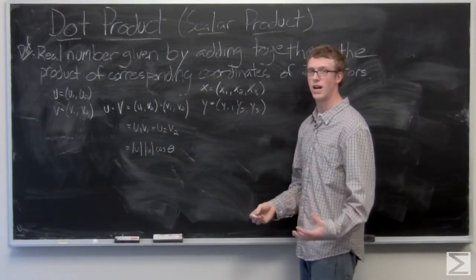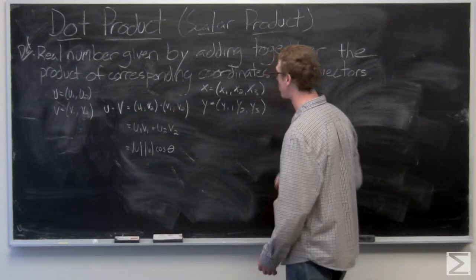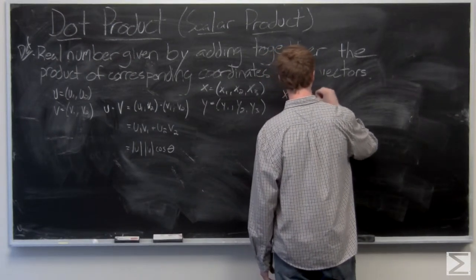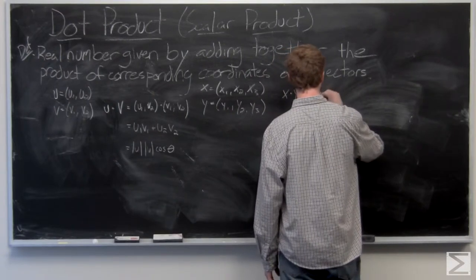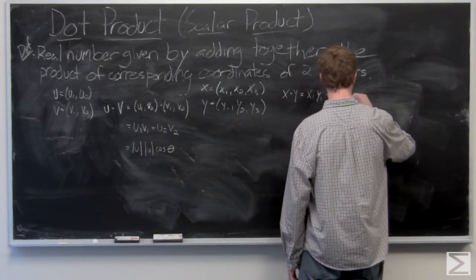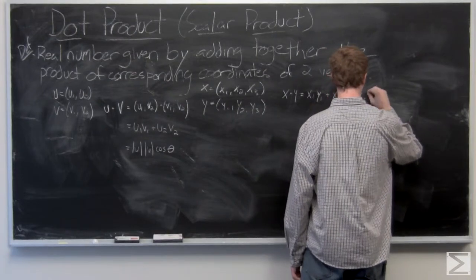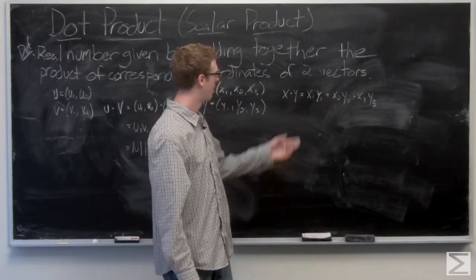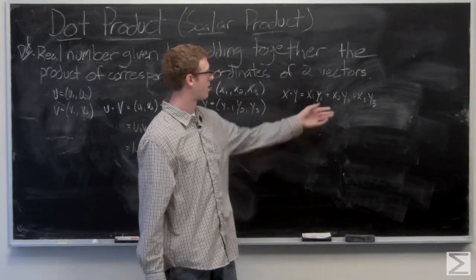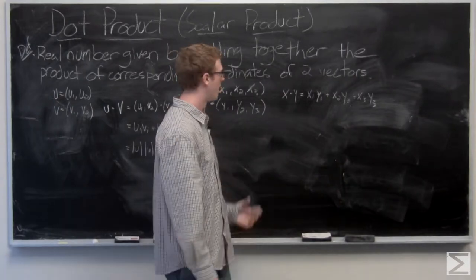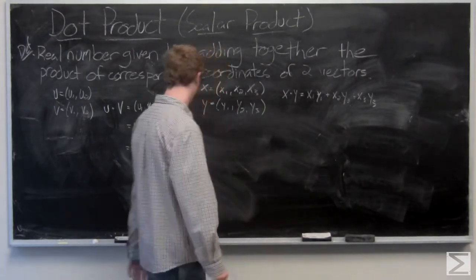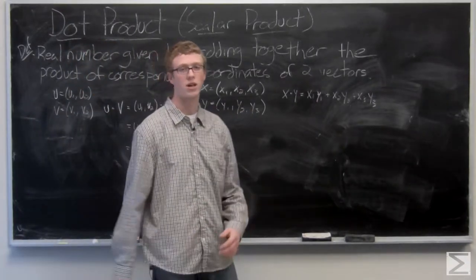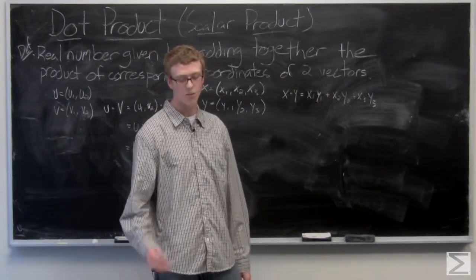You'll see x dot y very similar to what we got in our first one. So the result, again, a scalar: x1 y1 plus x2 y2 plus x3 y3. Again, the magnitude—it's also equal to the magnitude of x times the magnitude of y times the cosine of theta, which is the angle between them.